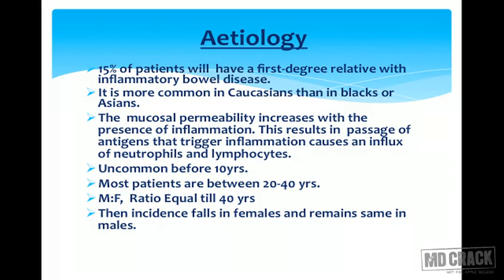15% of patients will have first-degree relatives with inflammatory bowel disease. It is more common in Caucasians than blacks or Asians. Mucosal permeability increases with inflammation, resulting in passage of antigens that trigger inflammation and cause an influx of neutrophils and lymphocytes. It is uncommon before 10 years; most patients are between 20 to 40 years. Male to female ratio is equal till 40 years of age, but incidence falls in females and remains the same in males later.